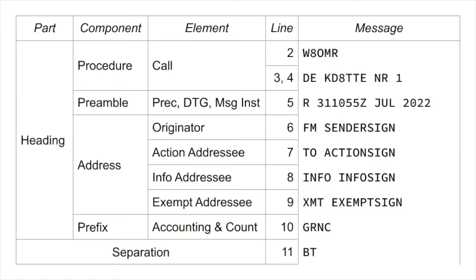So now we are going to show the entire heading part, including line 2, which is the call sign or call signs of the receivers. In voice procedure, these are the call signs that come before "this is." Line 1 was used in tape relay and is not used in voice or print procedure. In this example, W8OMR is the receiving station and KD8TTE is the transmitting station for message number 1. The from address — the originator — line 6, is the sign, which could be a call sign, a tactical call sign, a position like an ICS position, or some other indicator, even a name.